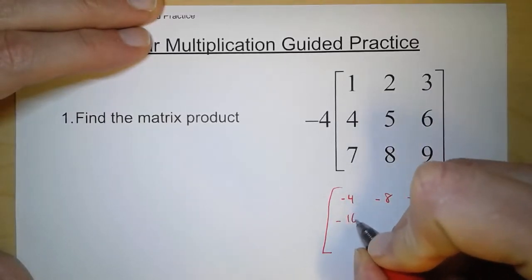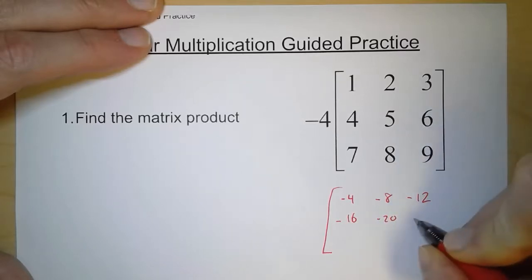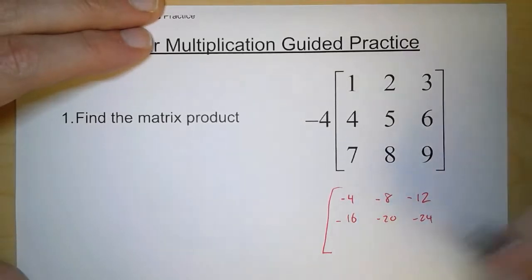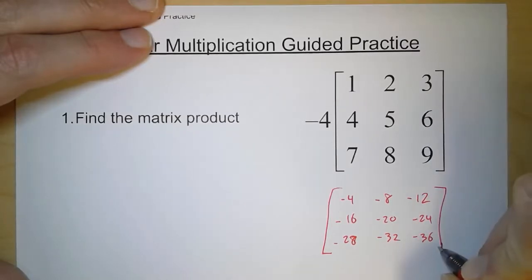Negative 16, negative 20, negative 24 in the second row. Negative 28, negative 32, and negative 36 in the last row.